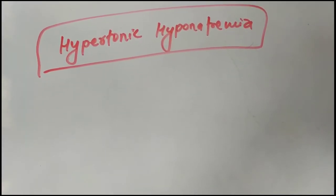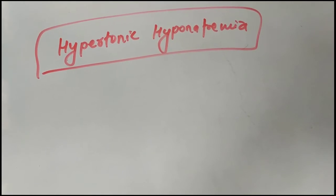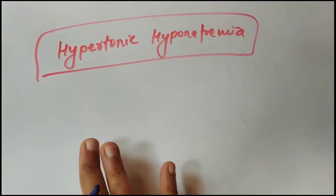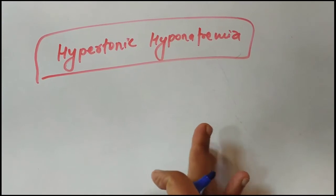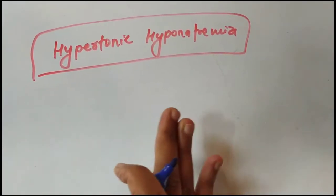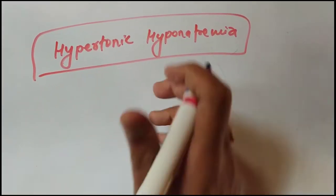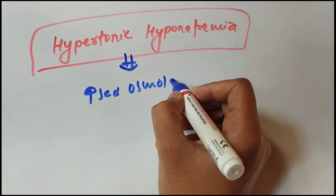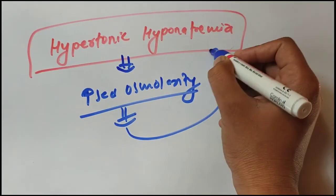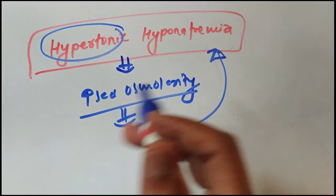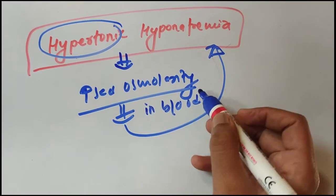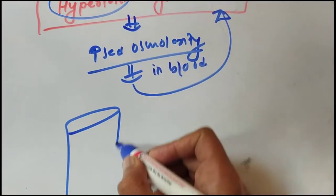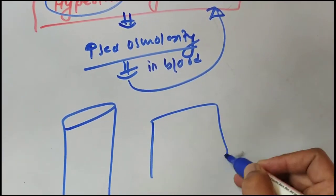Another term is hypertonic hyponatremia, which is a different entity from the three main classifications. Hypertonic hyponatremia means there is increased osmolarity in the blood, and this increased osmolarity ultimately causes hyponatremia. The previous types — hypovolemic, euvolemic, hypervolemic — fall under hypotonic hyponatremia.